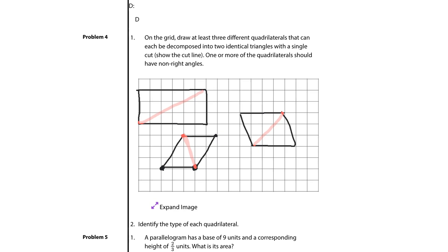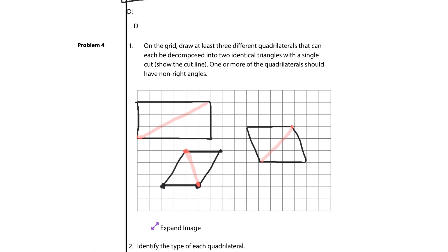There's three quadrilaterals that can be decomposed into two identical triangles. Identifying each type of quadrilateral, this is a rectangle and these two are parallelograms. And of course, a rectangle is also a parallelogram.